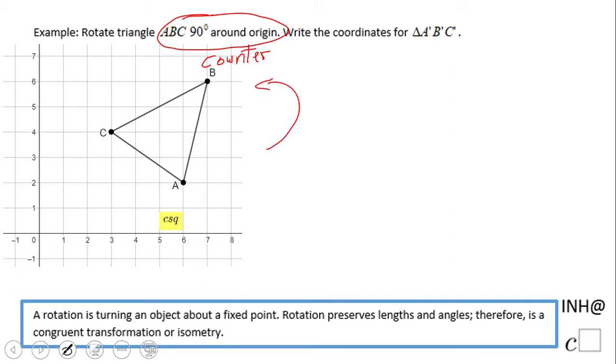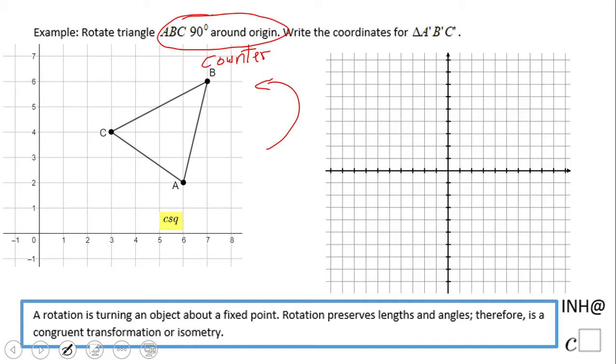We need to find the coordinates of A prime, B prime, and C prime. I'm going to use graph paper to see what's going on. I'm going to start with point C, which is closest to the origin, as we rotate around that point.